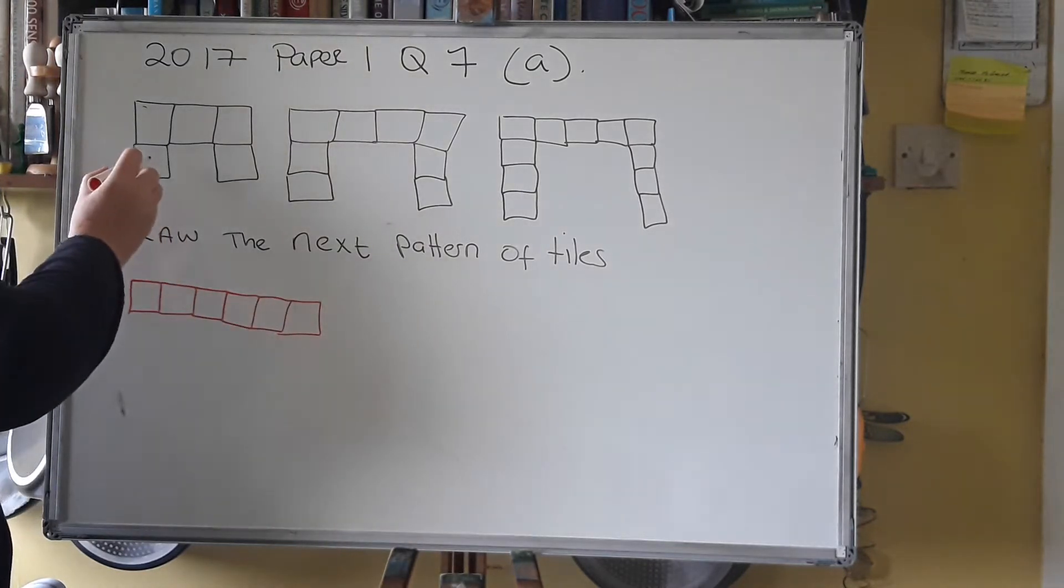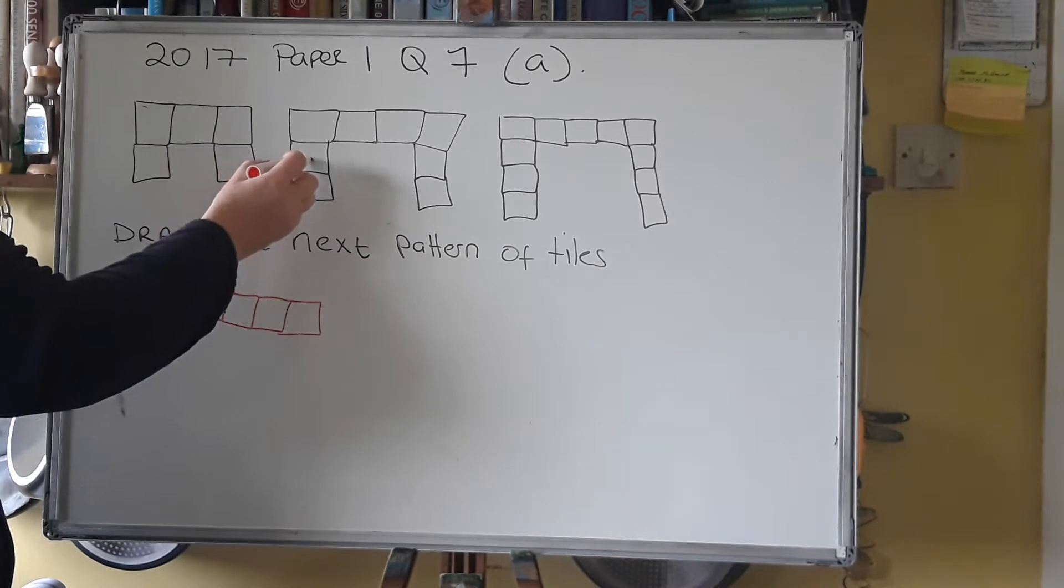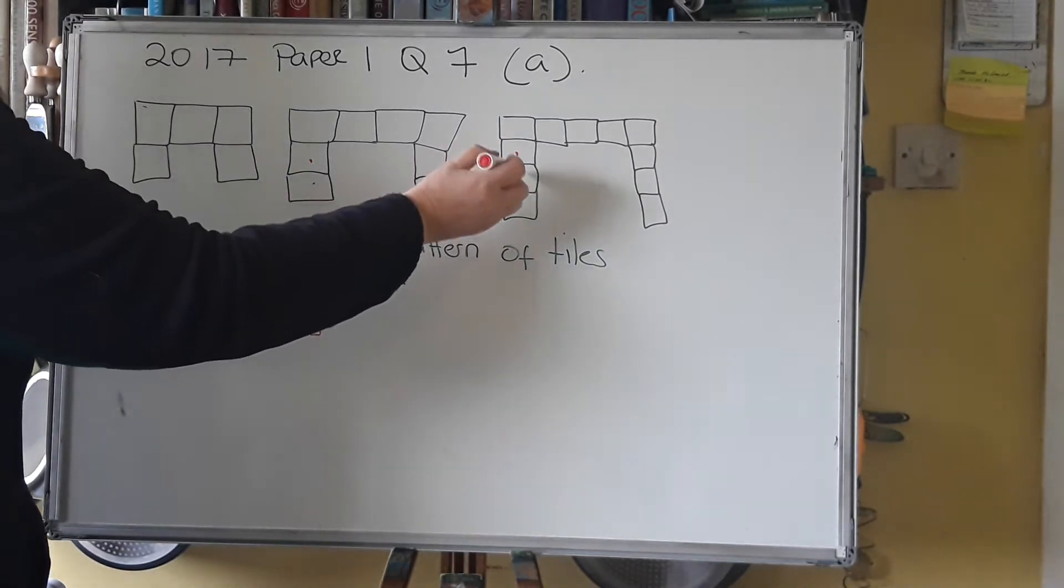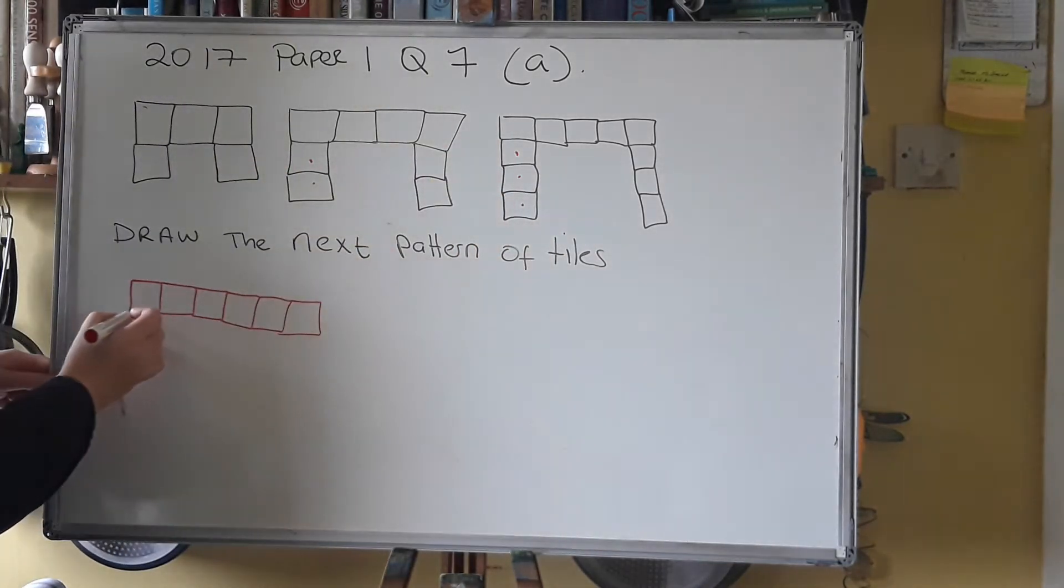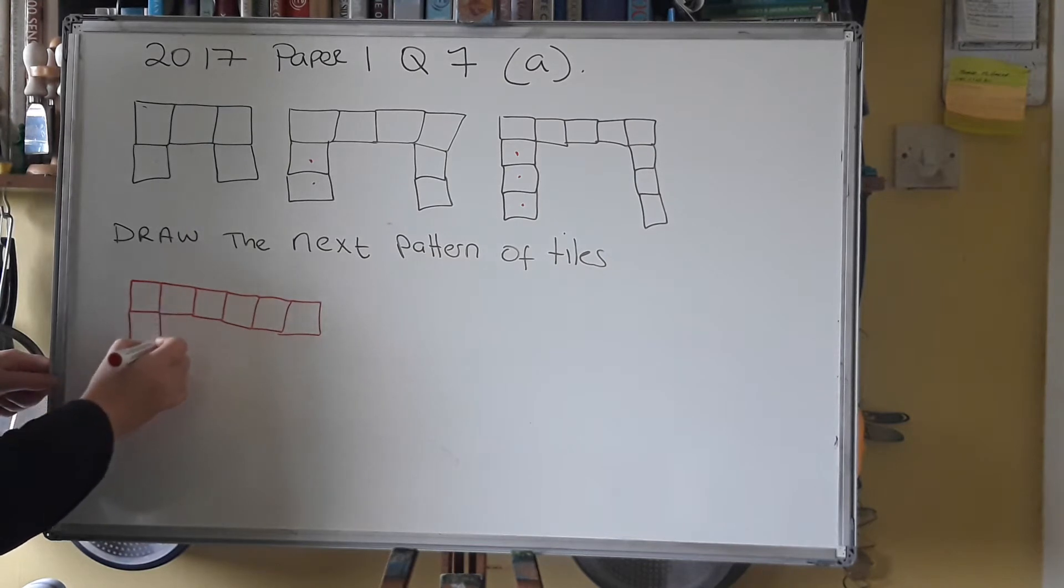So 1, 2, 3, 4, 5, 6 here. There's 1 added on here, here there's 2 added on, here there's 3 added on. So here there's going to be 4 added on.